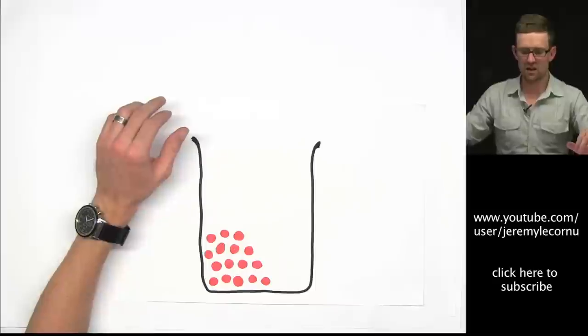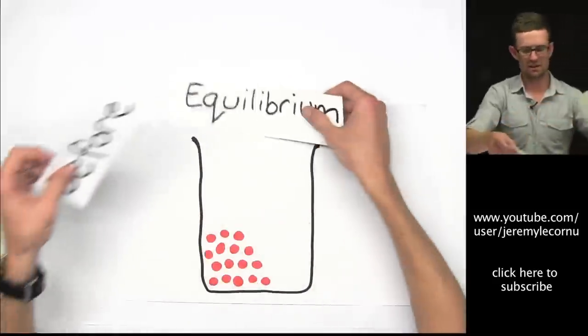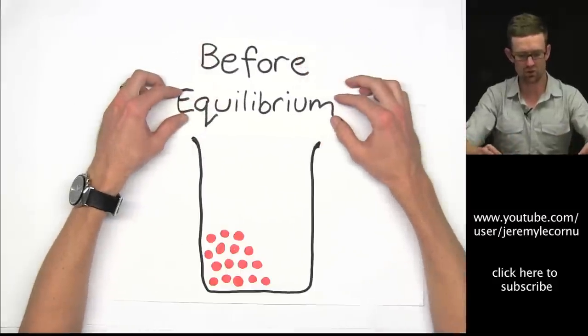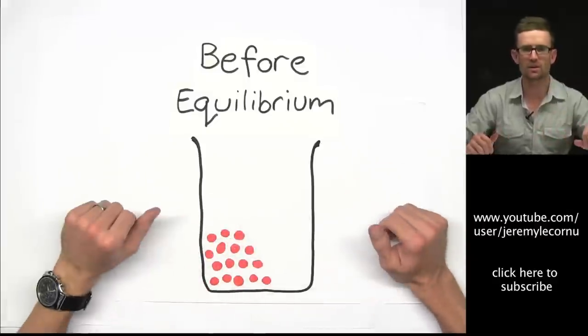So I've got an example here. We've got a beaker. This beaker has some particles down in this bottom left-hand corner, and what we say is this is before equilibrium.